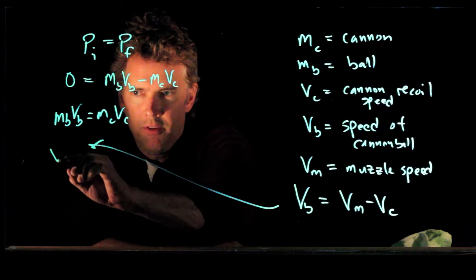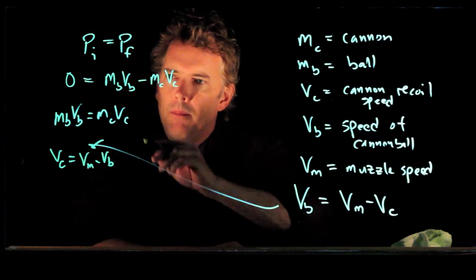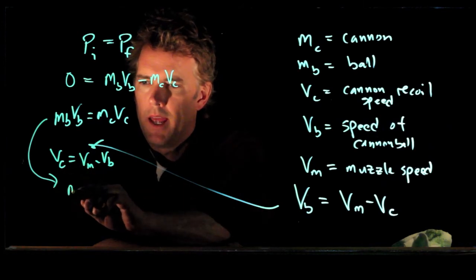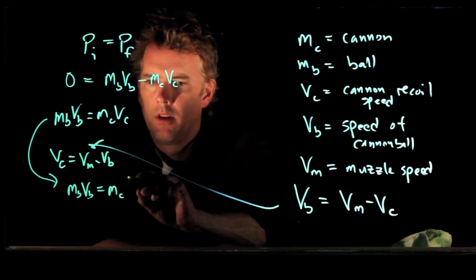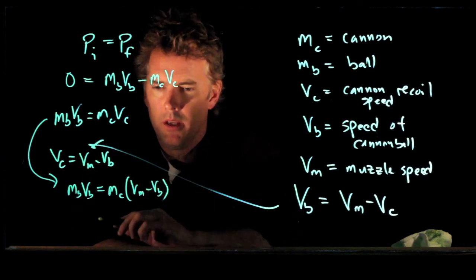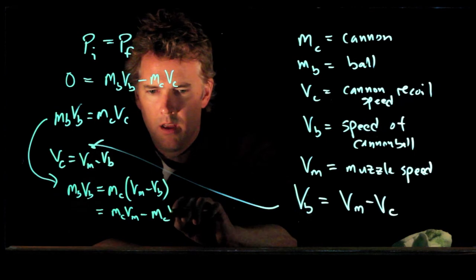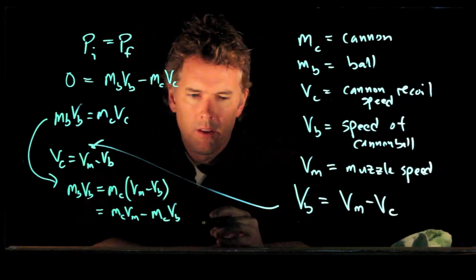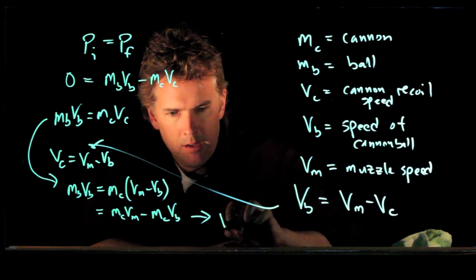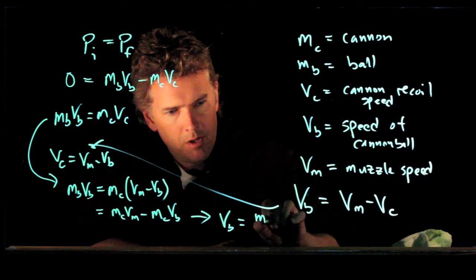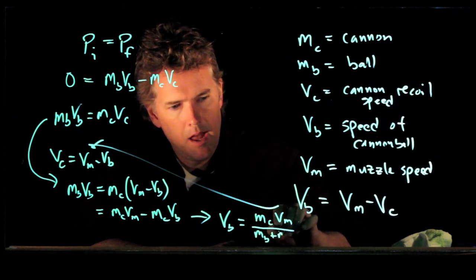We have V sub C equals V sub M minus V sub B. Now if I plug that into this expression, we get M sub B times V sub B equals M sub C times (V sub M minus V sub B). Multiplying that out: M sub C times V sub M minus M sub C times V sub B. Rearranging all these terms and solving for V sub B, we get V sub B equals M sub C times V sub M divided by (M sub B plus M sub C).